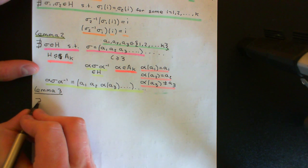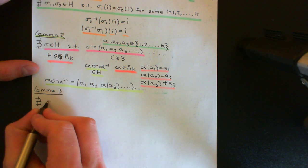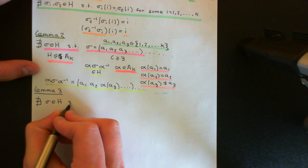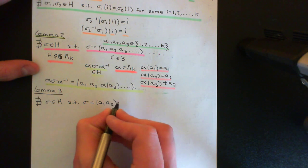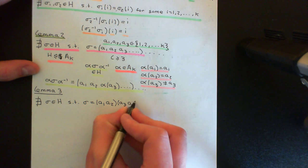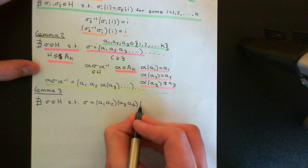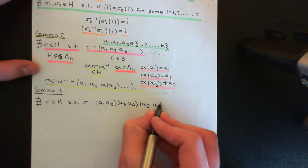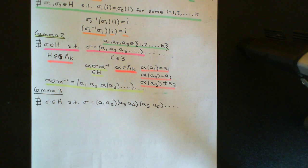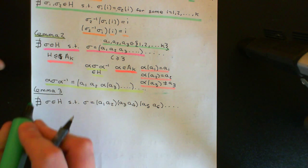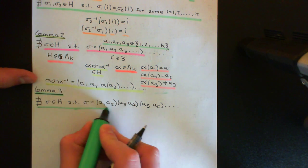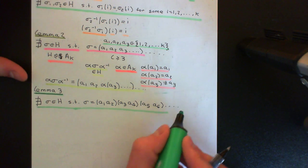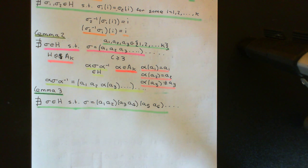Lemma 3: there cannot exist an element sigma in H such that its cycle decomposition consists totally of 2-cycles — i.e., (a1, a2)(a3, a4)(a5, a6)... We don't need to prove it for the A5 case because we've already done that in the previous video. So we're really only interested in k ≥ 6. The dots indicate this could go on and on — any number of 2-cycles.